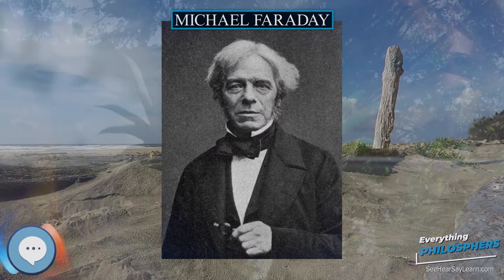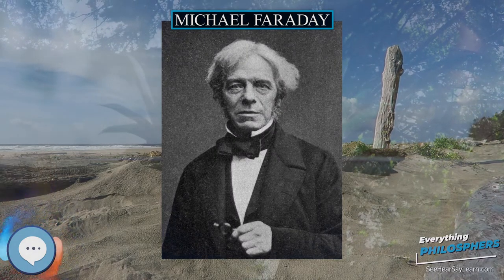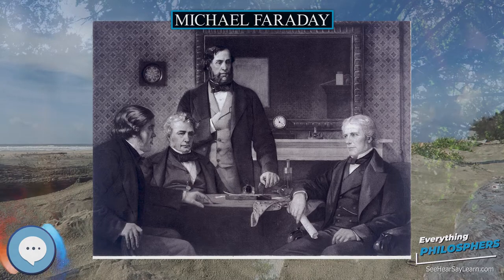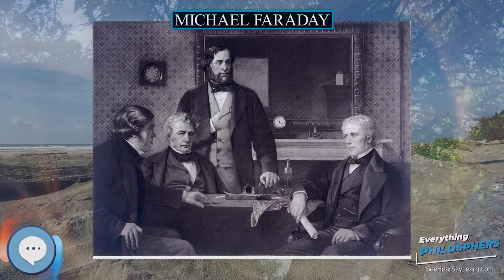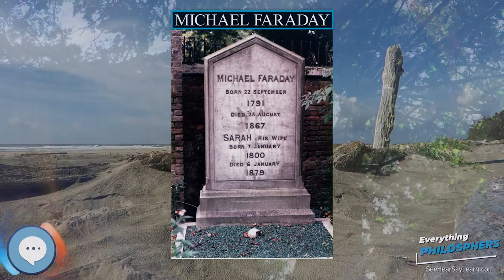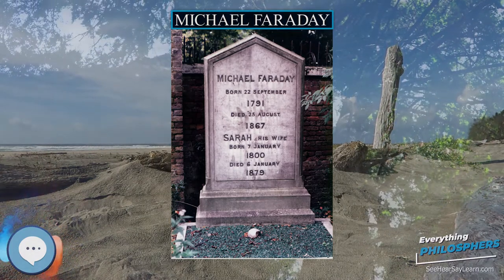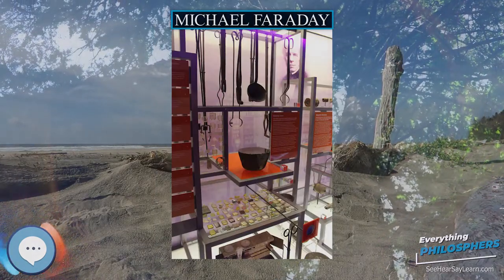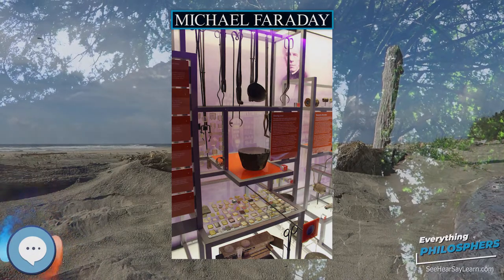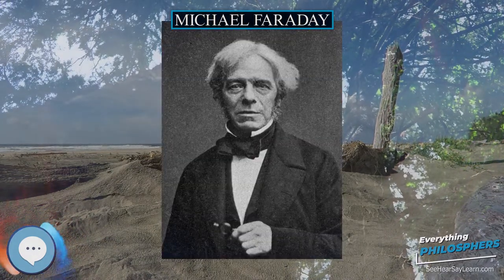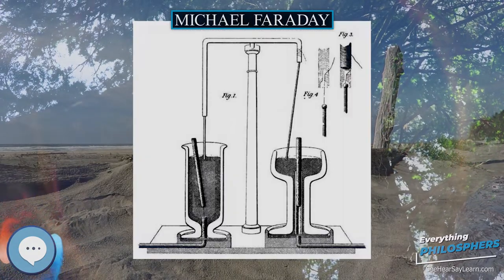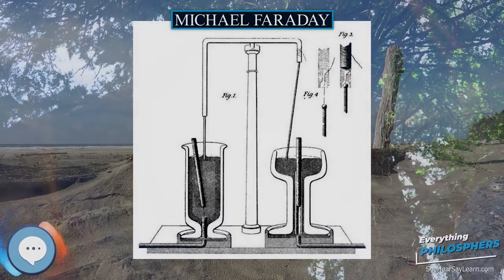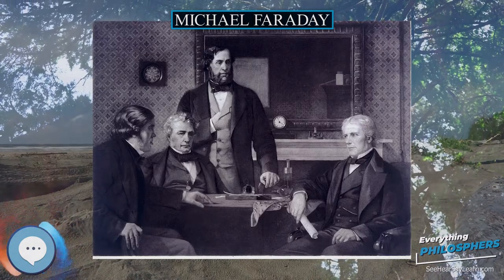In 1832, he completed a series of experiments aimed at investigating the fundamental nature of electricity. Faraday used static, batteries, and animal electricity to produce the phenomena of electrostatic attraction, electrolysis, magnetism, etc. He concluded that, contrary to the scientific opinion of the time, the divisions between the various kinds of electricity were illusory. Faraday instead proposed that only a single electricity exists, and the changing values of quantity and intensity would produce different groups of phenomena.